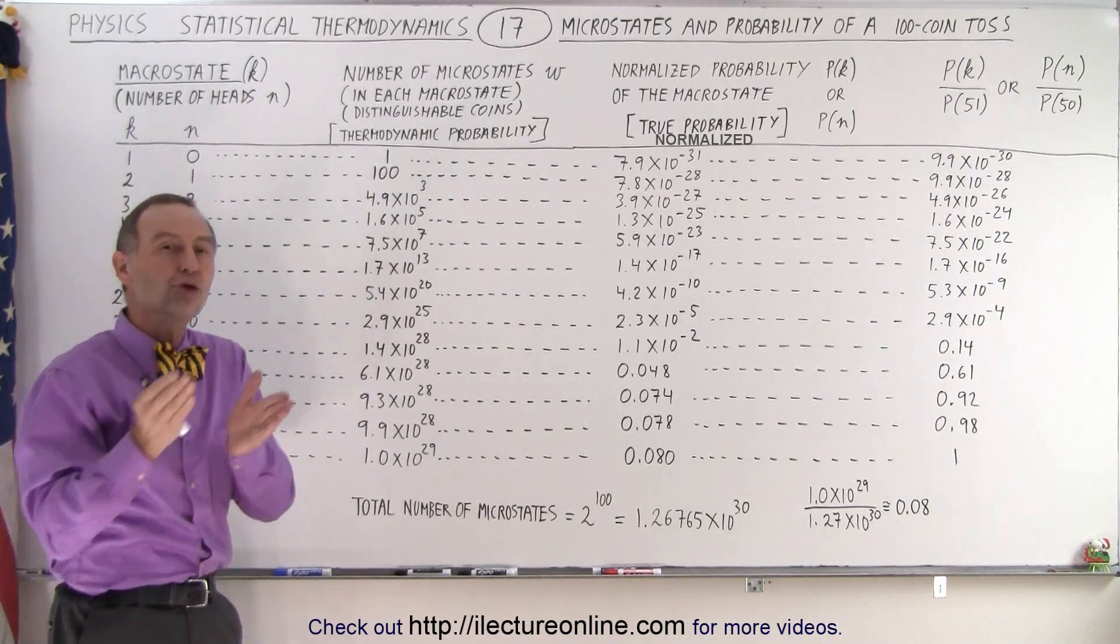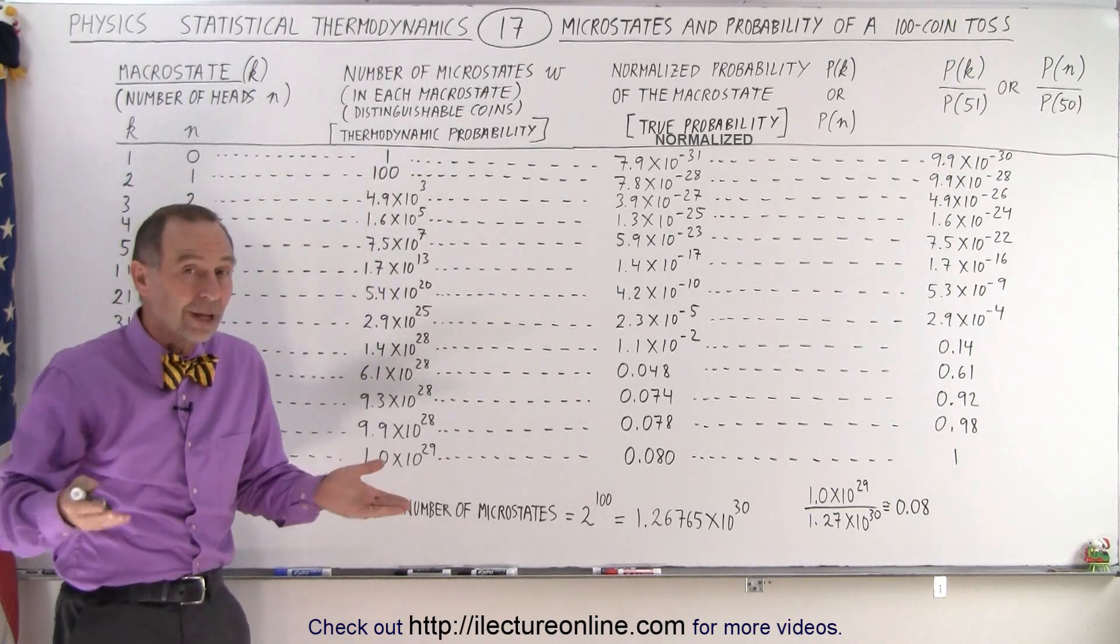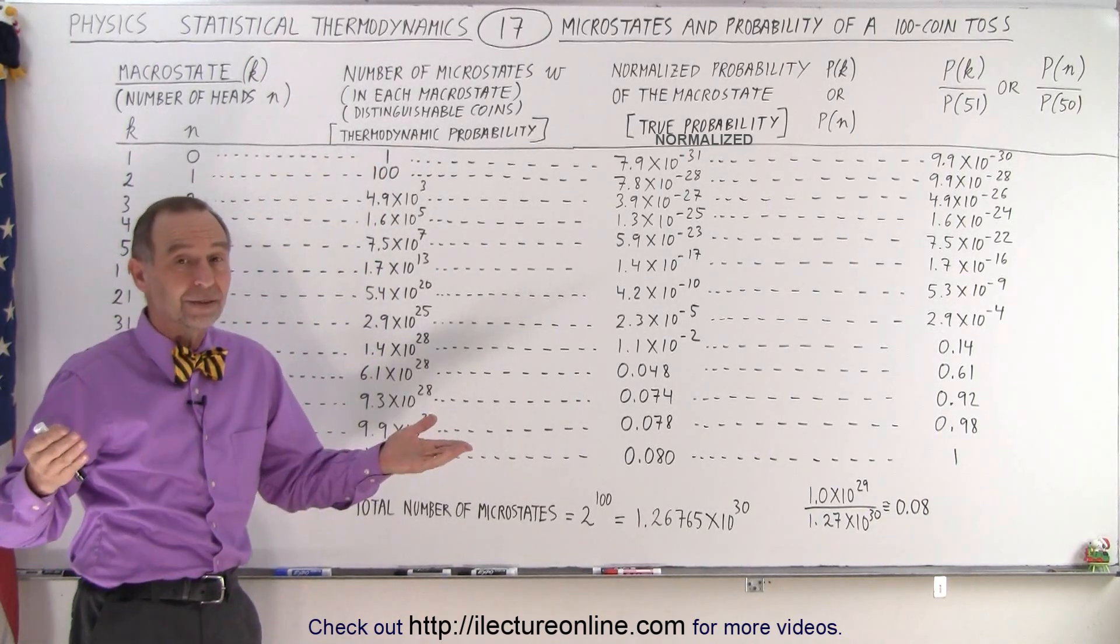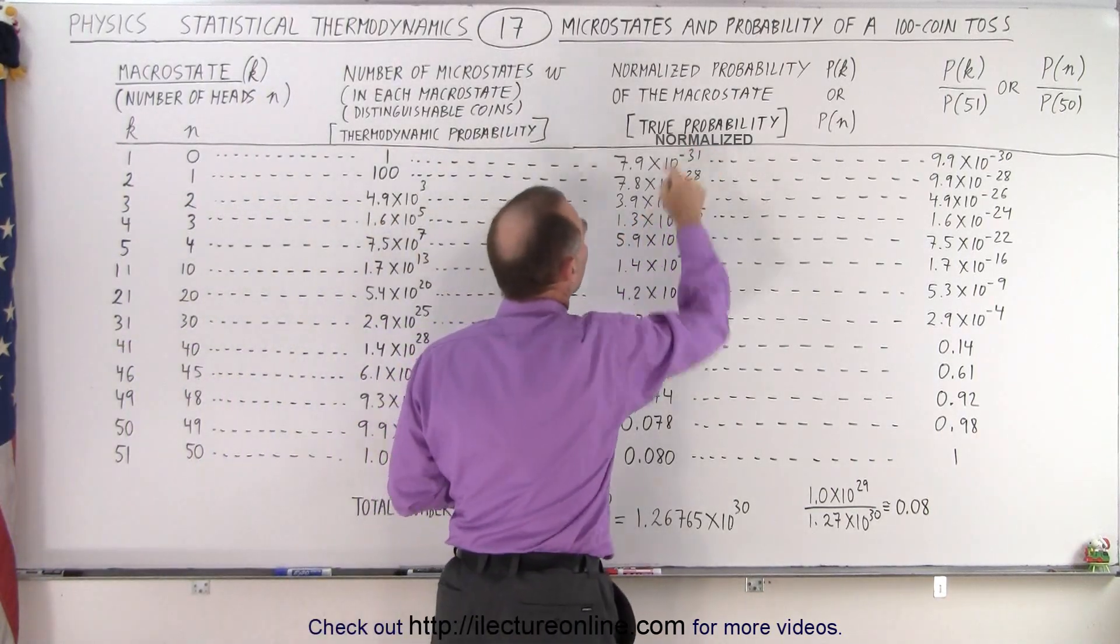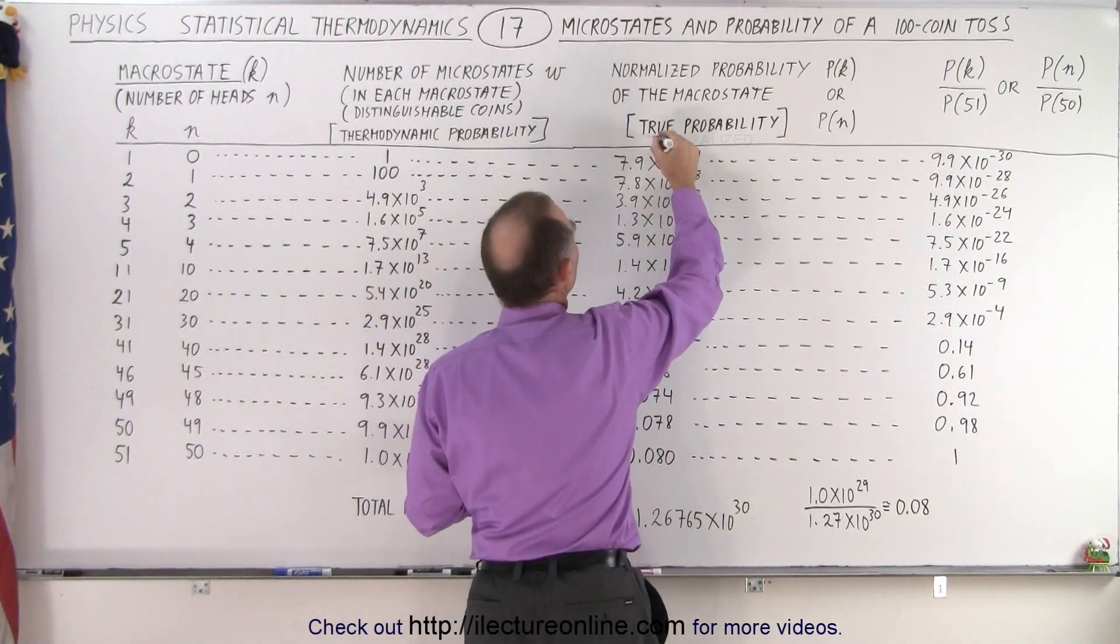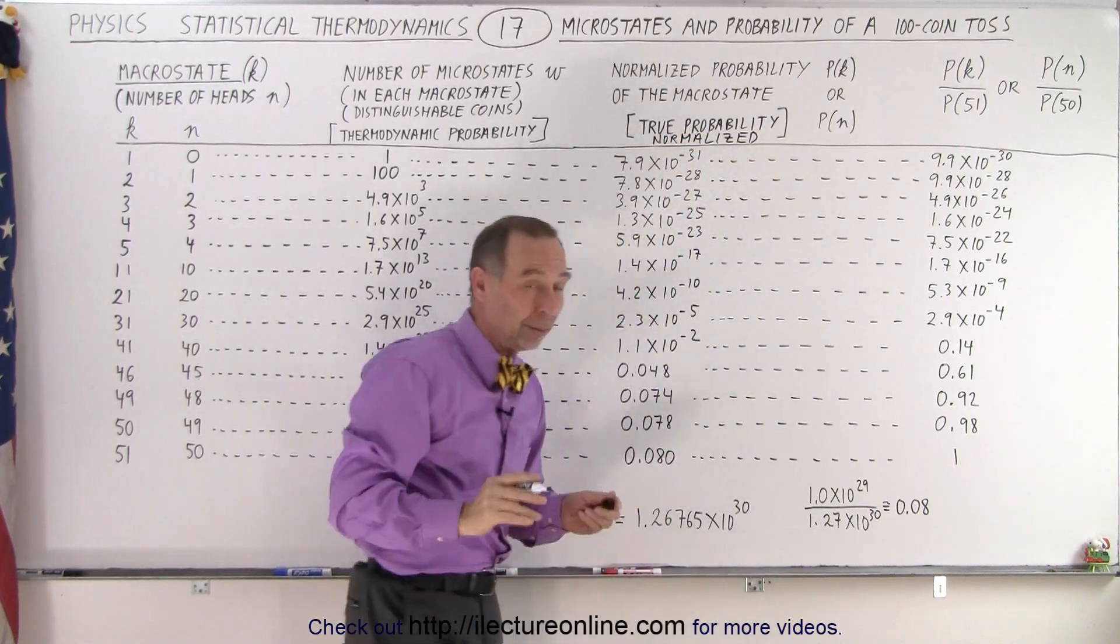But then we have what we call the true probability, because essentially, when we add them all up, we should get equal to 1. If you add up all the probabilities, if it's normalized, that's what we mean by true probability. True probability means normalized.